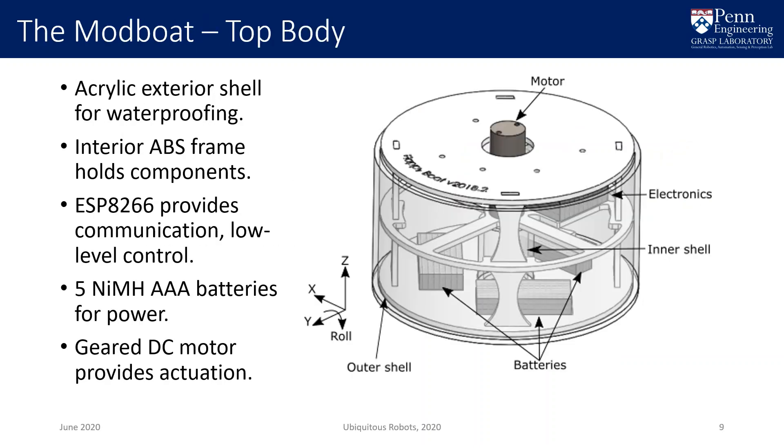The resulting design, the modboat, is composed of two bodies. The top body is built of an acrylic shell that provides a waterproof compartment for the motor, batteries, and an ESP8266 processor. We have omitted the docking points as this work focuses on single units, but they can easily be added.